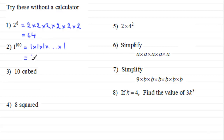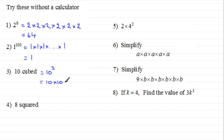Number three: ten cubed. Ten cubed is ten to the power three, in other words ten multiplied by ten multiplied by ten. Ten tens are a hundred, and a hundred tens are a thousand.